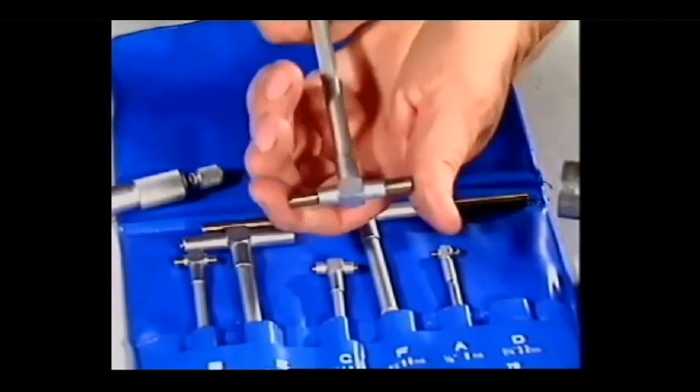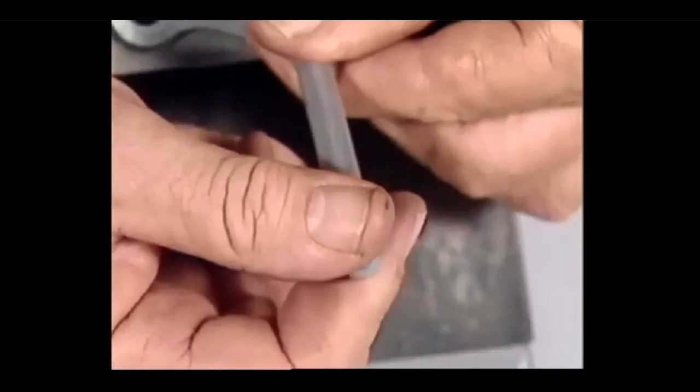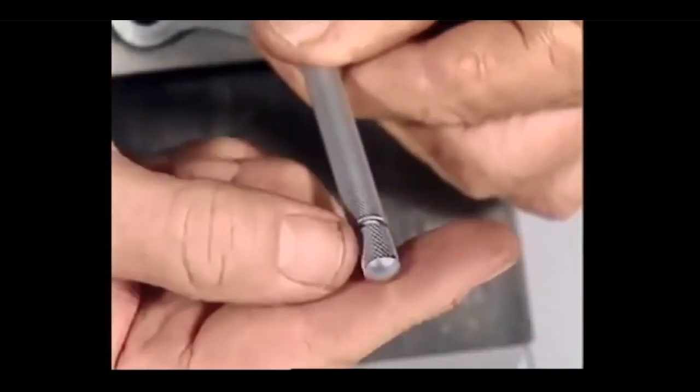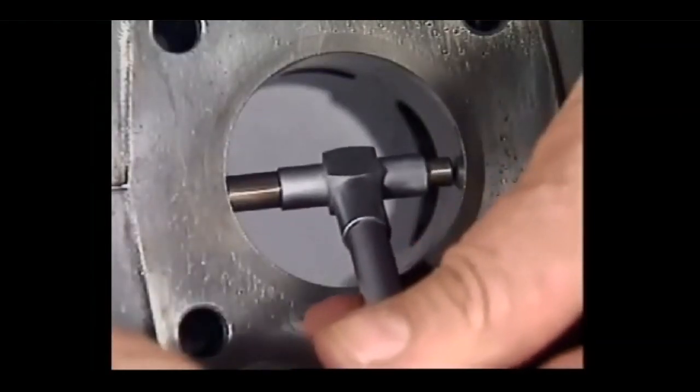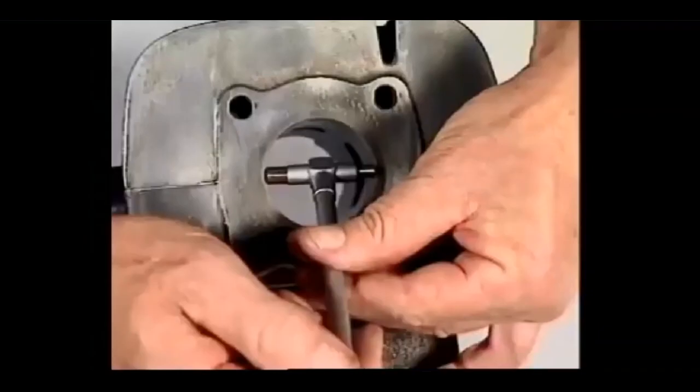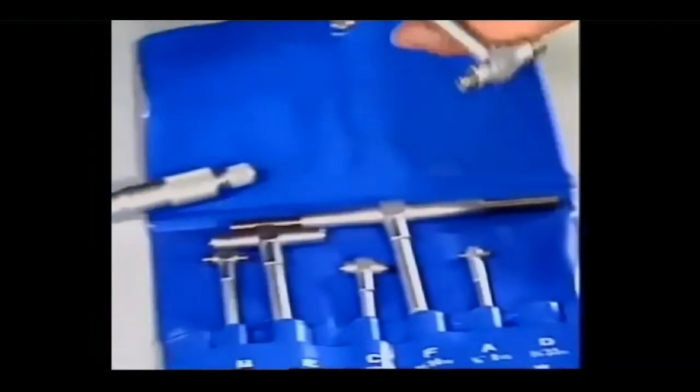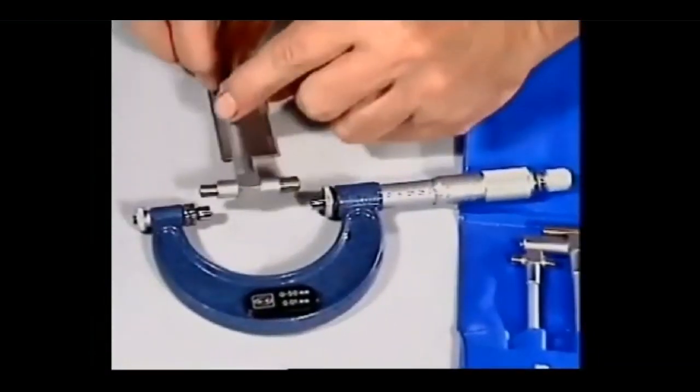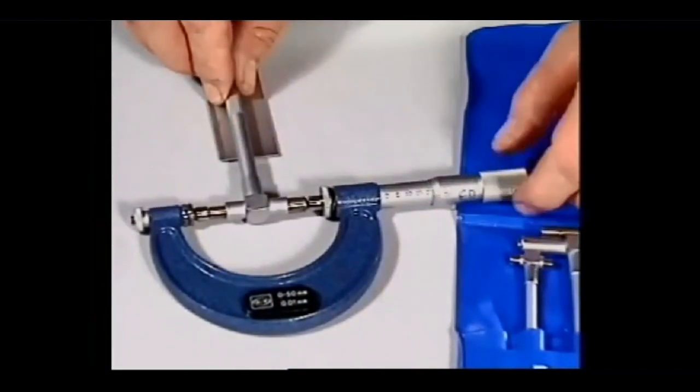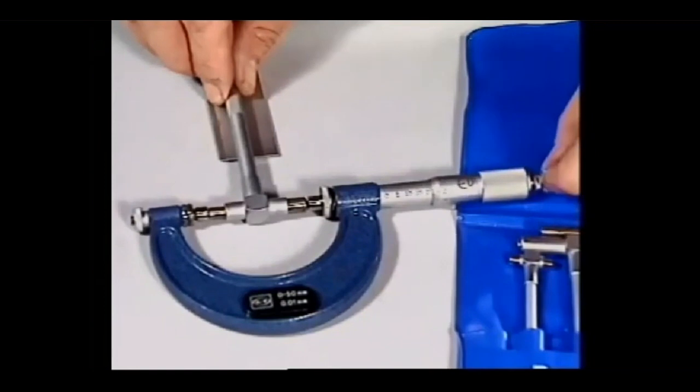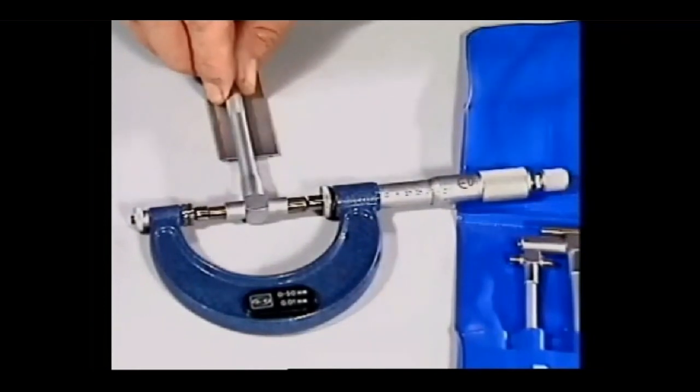For measuring distances in awkward spots like the bottom of a deep cylinder, this telescopic bore gauge has spring-loaded plungers that can be unlocked with this screw, so they slide out and touch the walls of the cylinder. The screw then locks them in that position. The gauge can be withdrawn, and the distance across the plungers can be measured with a micrometer or calipers to convey the diameter of the cylinder at that point.